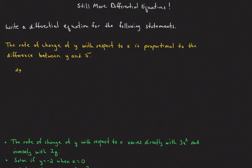So dy/dx is proportional to means it's going to be equal to k times something that follows — a constant of proportionality k times whatever is described in the next phrase. In this case that's the difference between y and 5. Difference means subtraction, and between y and 5 means in that order: y minus 5. So there's our differential equation that converts that description into an actual differential equation.